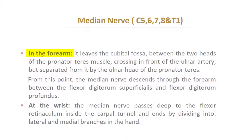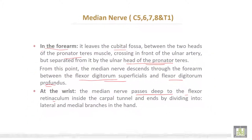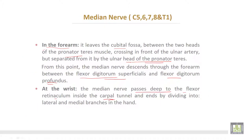In the forearm, the median nerve leaves the cubital fossa between the two heads of pronator teres, crossing in front of the ulnar artery but separated from the ulnar artery by the deep head of pronator teres. From this point, the median nerve descends through the forearm between flexor digitorum superficialis and flexor digitorum profundus. At the wrist, it passes deep to the flexor retinaculum inside the carpal tunnel, ending by dividing into lateral and medial branches in the hand.